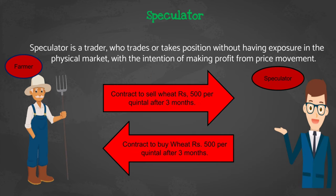Next is speculator. A speculator is a trader who trades or takes a position without having exposure in the physical market, with the intention of making profit from price movement. A speculator is very smart — he analyzes future price fluctuations today. The speculator's intention to enter a futures contract is only to earn profit. The speculator believes that after two months wheat price will increase, so the speculator enters a future contract with the farmer to buy wheat at 500 rupees per quintal after two months.